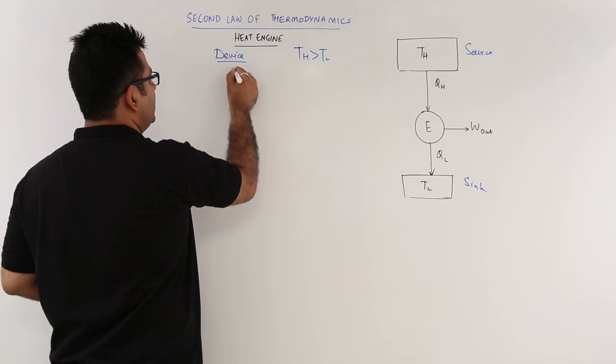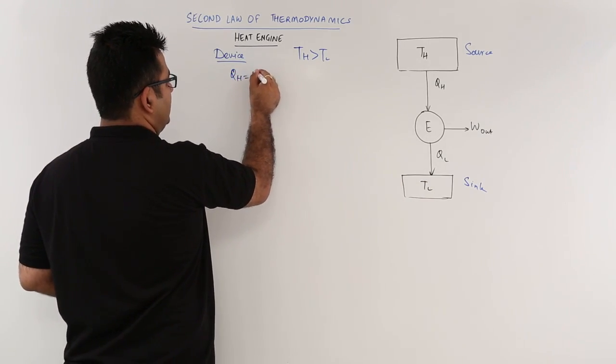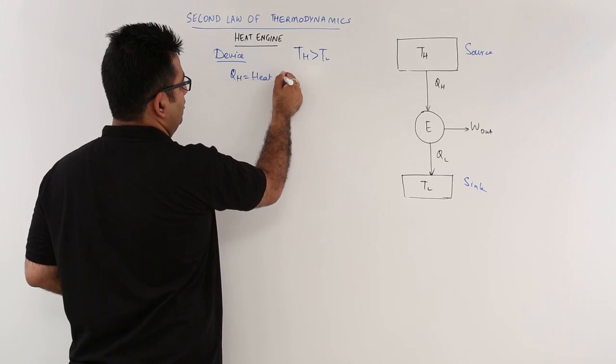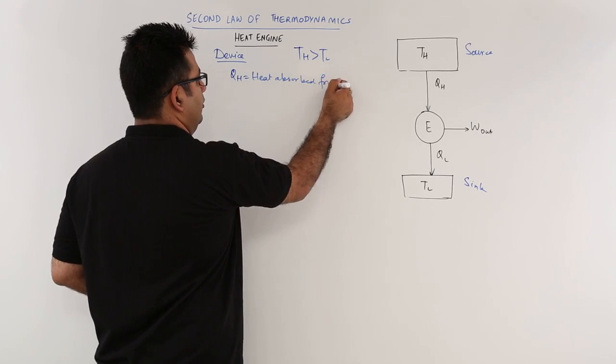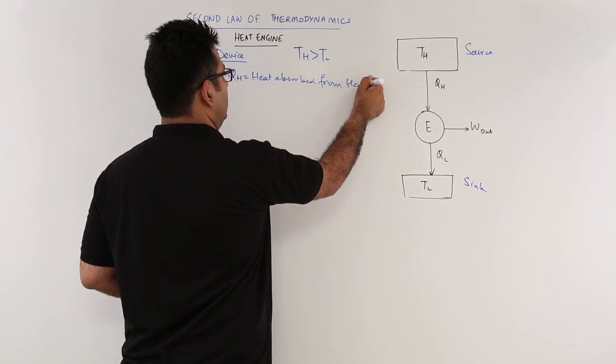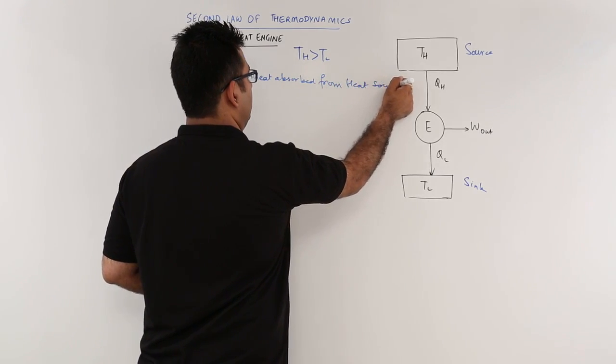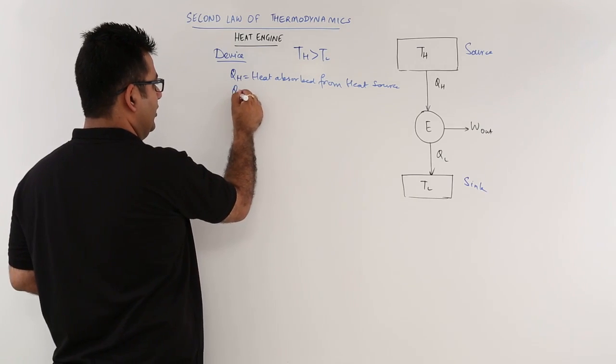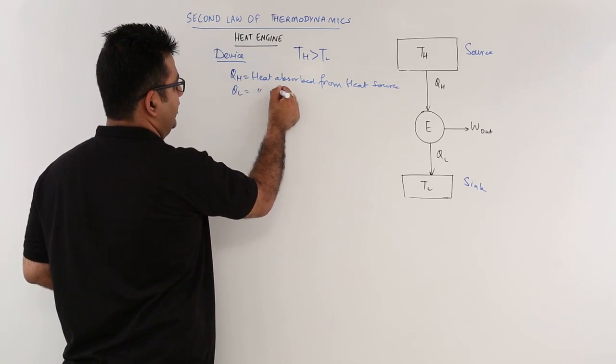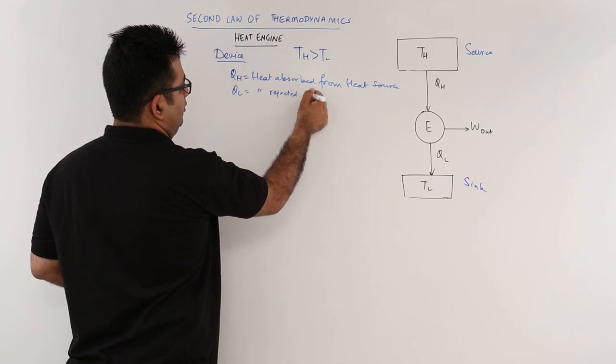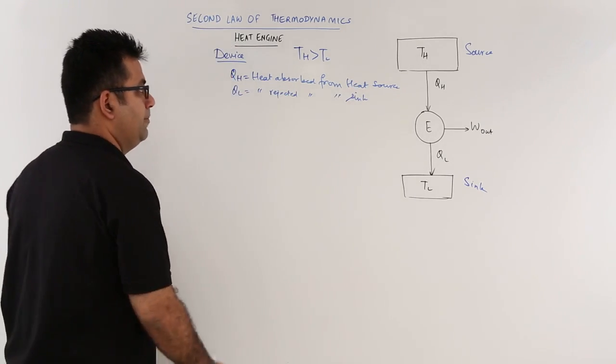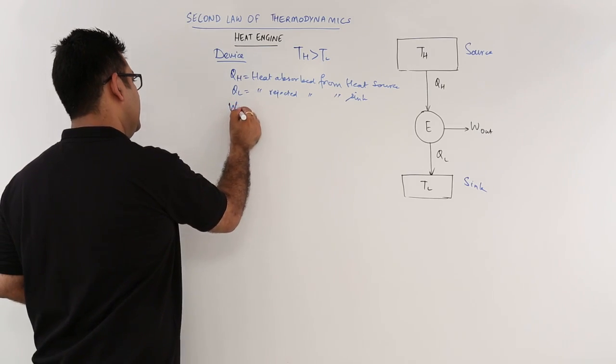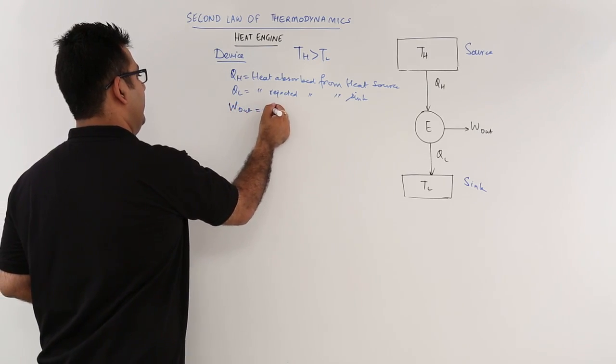If you talk about QH, this is the heat absorbed from heat source. QL is the heat rejected from heat sink. Now work out, this is the work output.